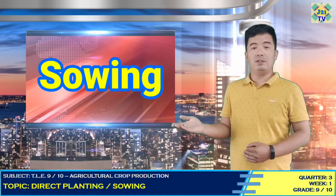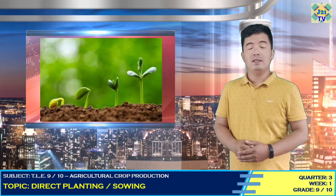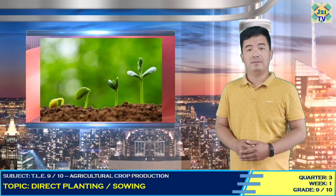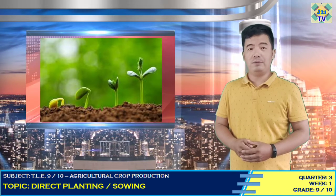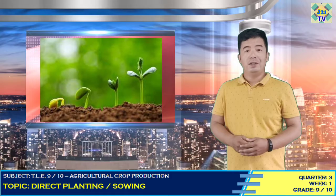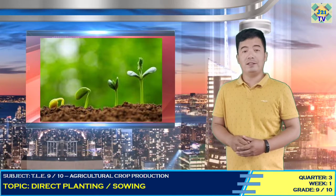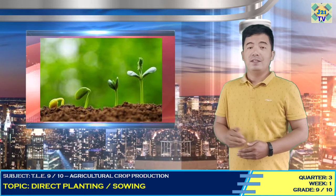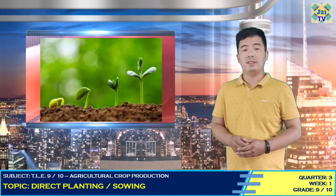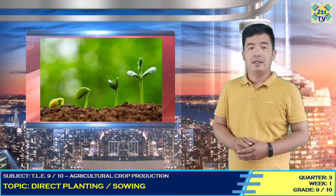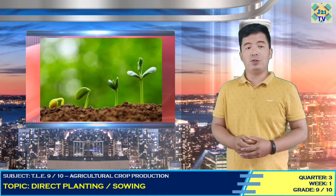Sowing is the most important operation in crop production. Seeds must be deposited at the required depth and position in the soil so as to get the optimum condition for germination. Sowing too shallow results in thin germination due to inadequate moisture at the top soil layer. If seeds are sown very deeply, the young seedlings may not be able to push through the thick layer of soil. Seeds must be sown at proper depth and properly covered with soil to get adequate moisture for germination.